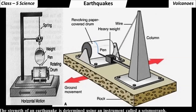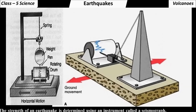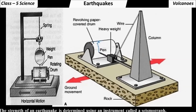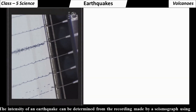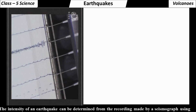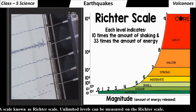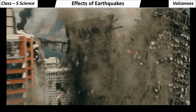The strength of an earthquake is determined using an instrument called a seismograph. It measures and records the intensity, direction and duration of earthquakes. The intensity of an earthquake can be determined from the recording made by a seismograph using a scale known as the Richter scale. Unlimited levels can be measured on the Richter scale.